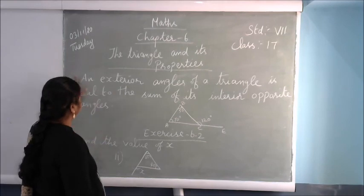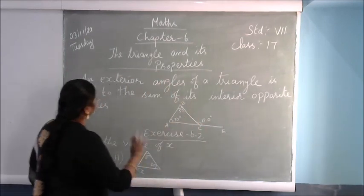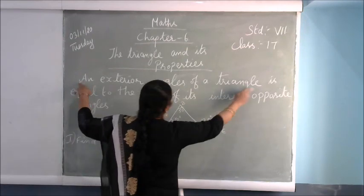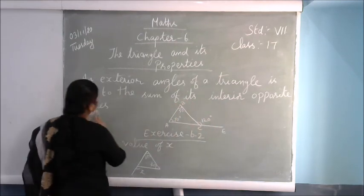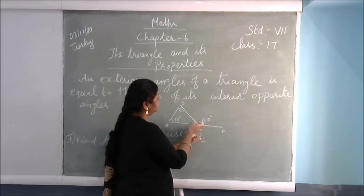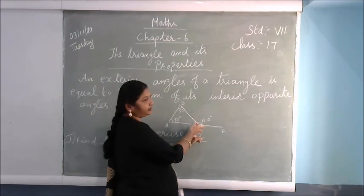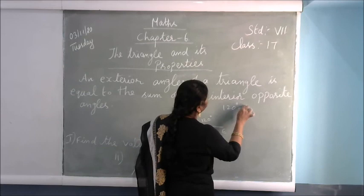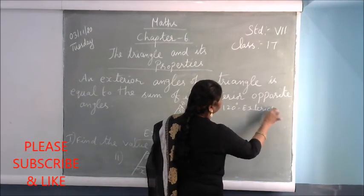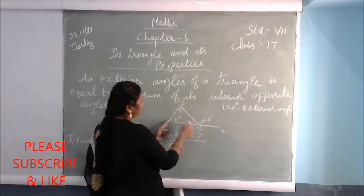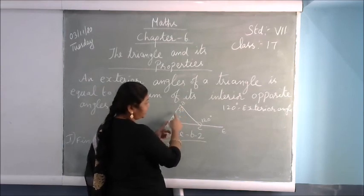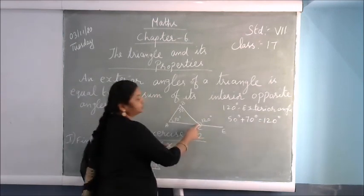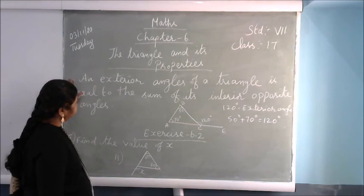Before starting Exercise 6.2, you should know about the exterior angle of a triangle. The exterior angle is outside the triangle, and it is equal to the sum of its two interior opposite angles. So if the interior opposite angles are 50 degrees and 70 degrees, adding them gives 120 degrees, which equals the exterior angle.